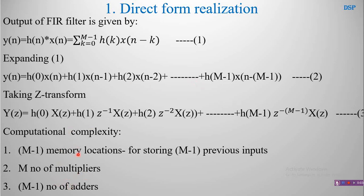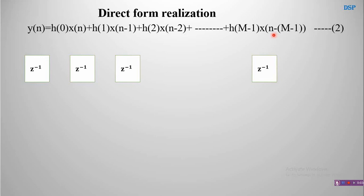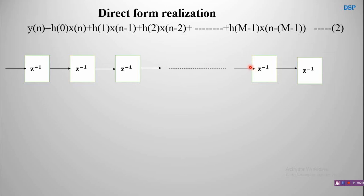The computational complexity depends on the number of memory locations, multipliers, and adders required to realize the output equation. To realize it, write the delay elements in series, each represented by z⁻¹ in a block. There are m-1 such delay elements, connected by arrow lines representing input and output for each block.